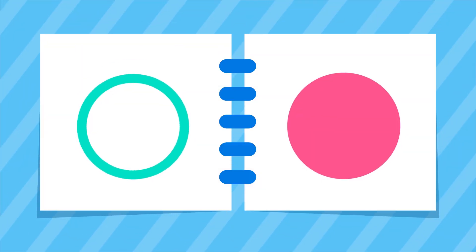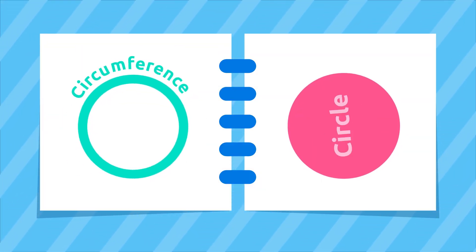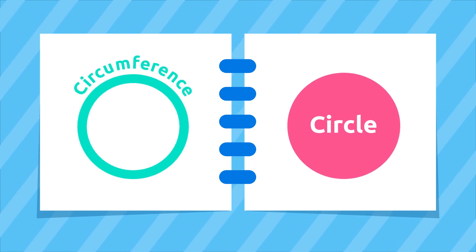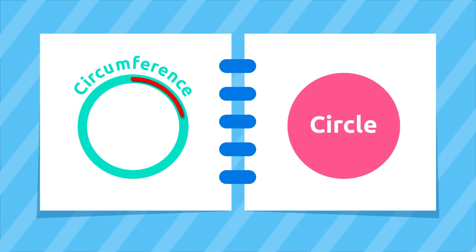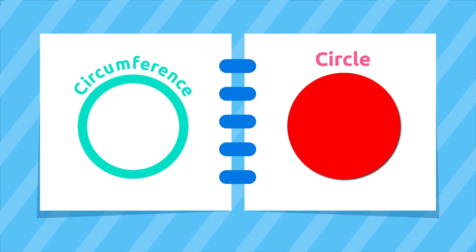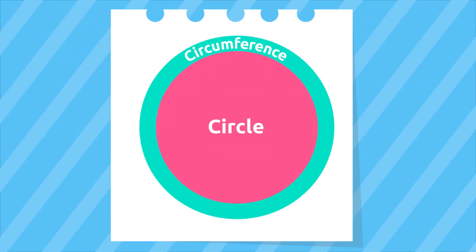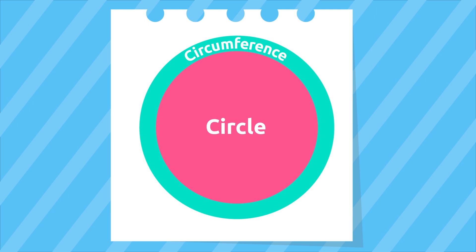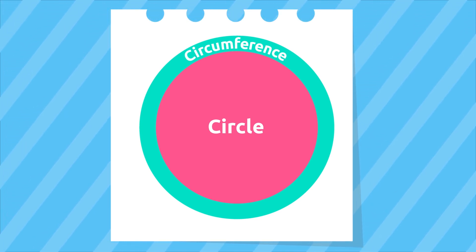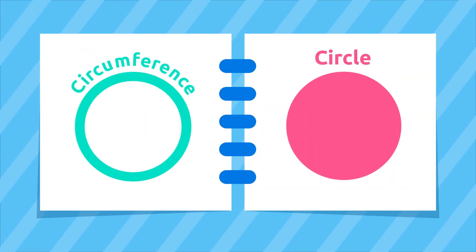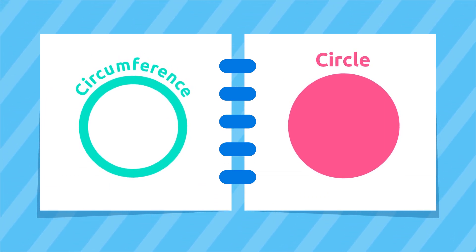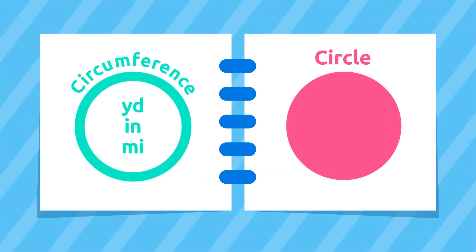The difference between a circumference and a circle is that the circumference is the line around the circle, and the circle is everything the circumference contains. In other words, the circle is inside of the circumference. As you have been able to see, the circumference is a line — that's why we measure its length in yards, inches, or miles.